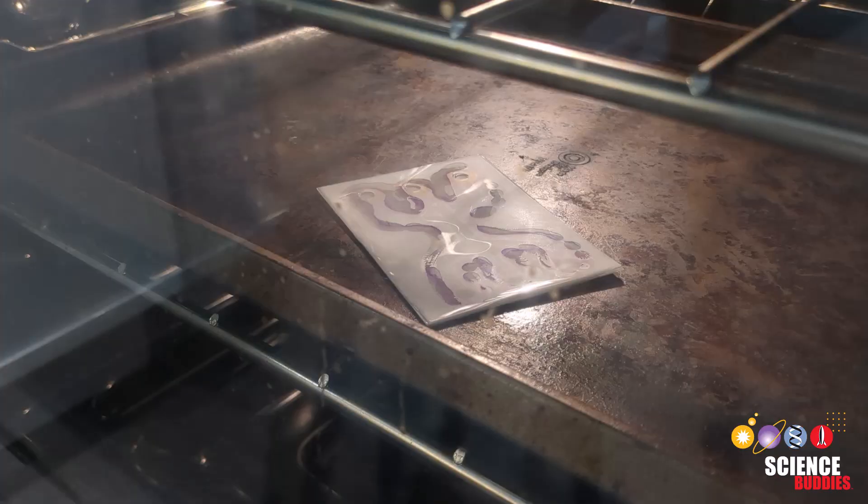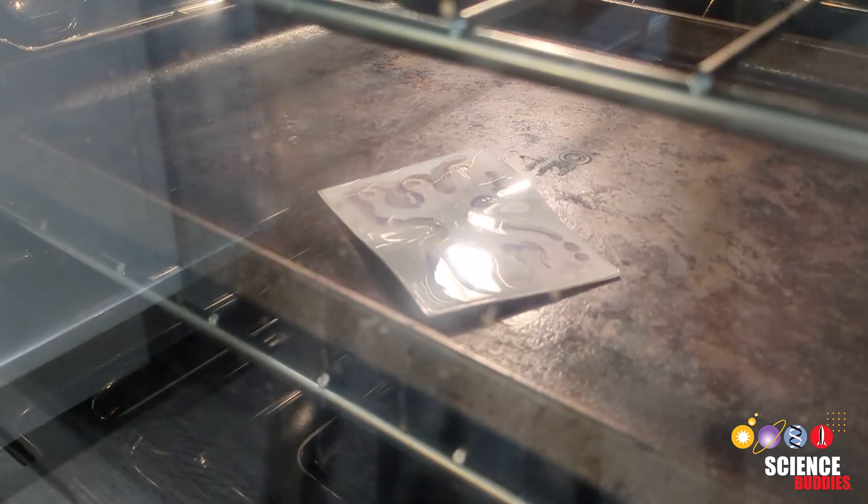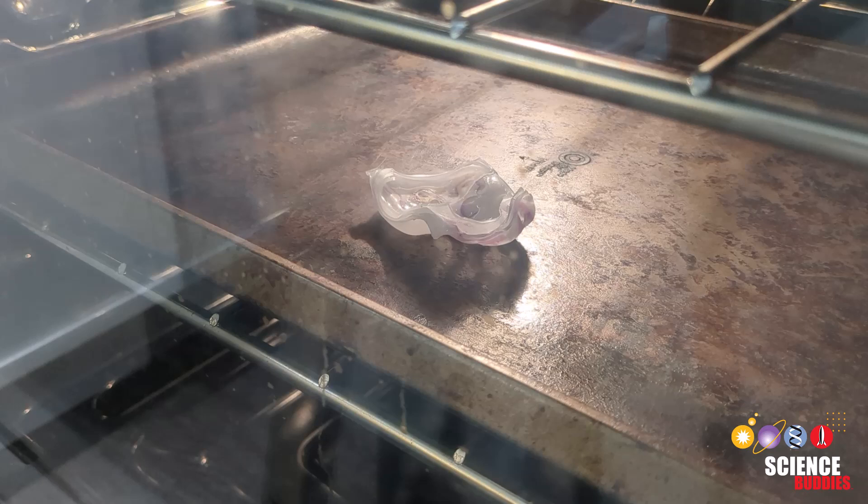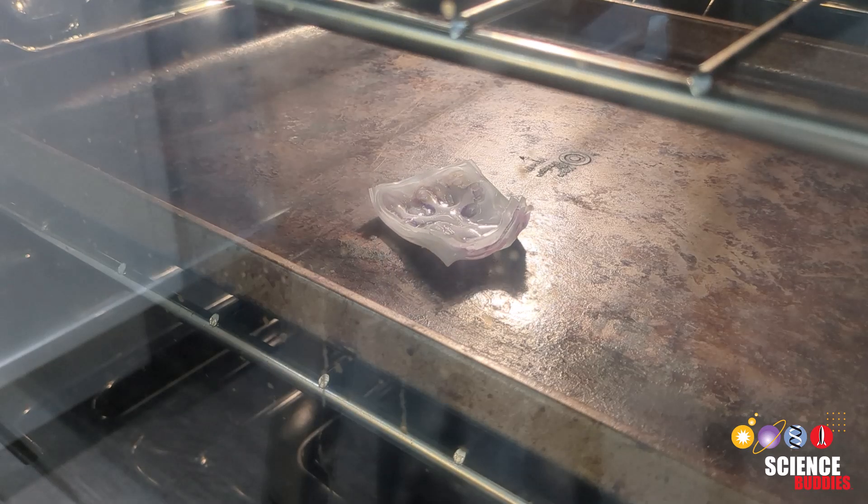Preheat your oven to 330 degrees Fahrenheit with the baking tray inside. After taking your initial measurements, place your microfluidic device in the oven for one to three minutes or until it stops moving.